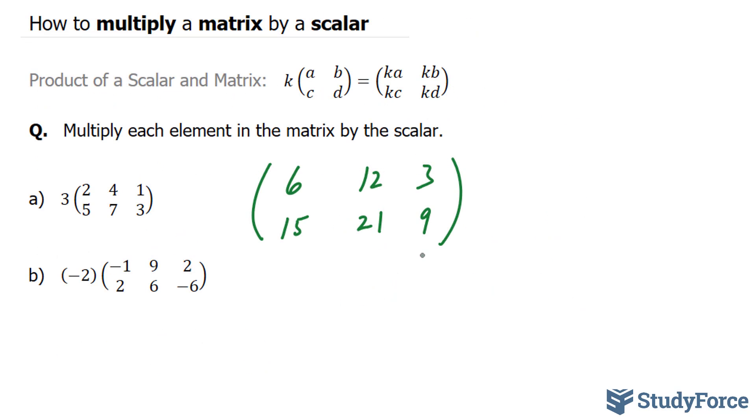For Part C, we'll do the exact same thing, but now we have a scalar of negative 2. Negative 2 times negative 1 is positive 2, negative 18, negative 4,